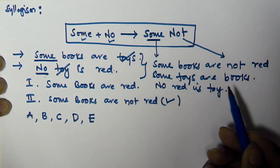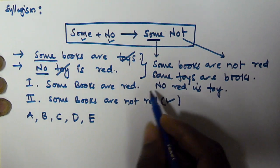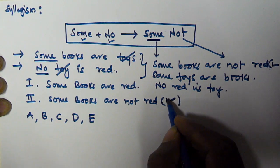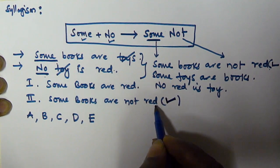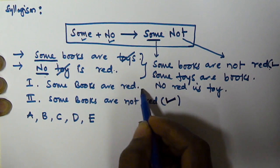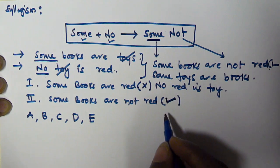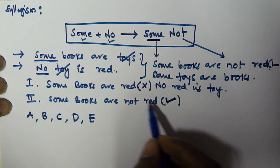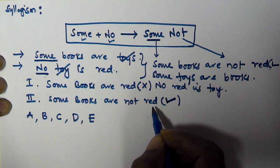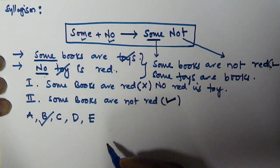The first derivation — 'some books are not red' — matches the given conclusion two. However, 'some books are not red' is the opposite of conclusion one ('some books are red'), so conclusion one is false. Therefore, conclusion two alone is true, and we must select option B.